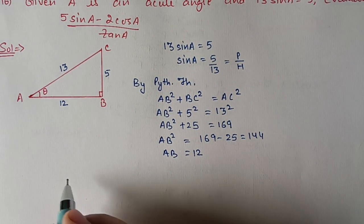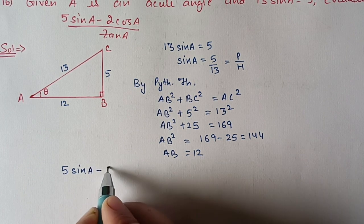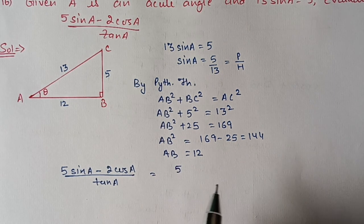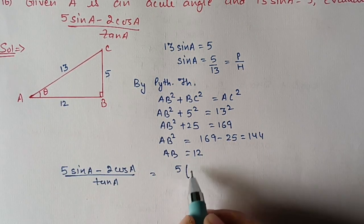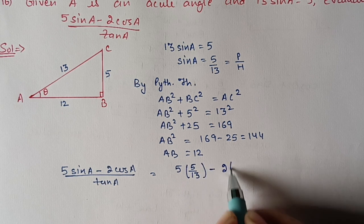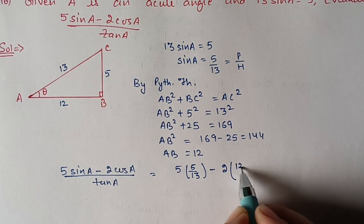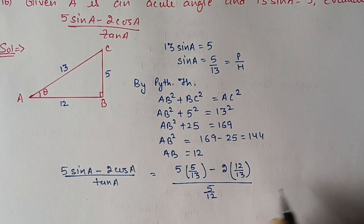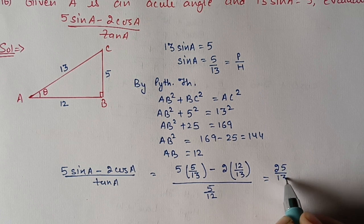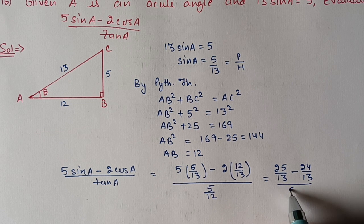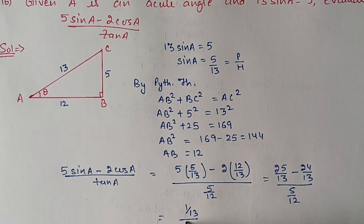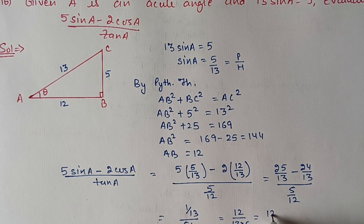Now we have to calculate (5sinA - 2cosA) / tanA. sinA means perpendicular by hypotenuse = 5/13; cosA means base by hypotenuse = 12/13; tanA means perpendicular by base = 5/12. So we get (25/13 - 24/13) / (5/12). In the numerator we get 1/13, and the denominator is 5/12. Reciprocating, we get 12/(13 × 5) = 12/65.